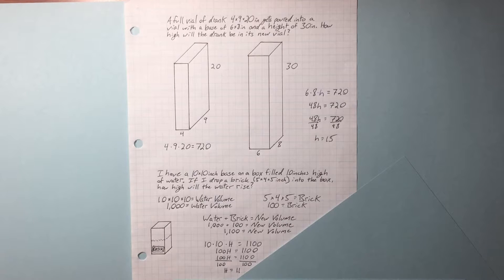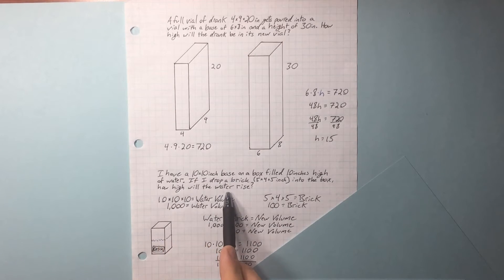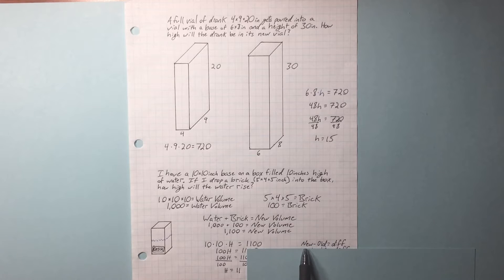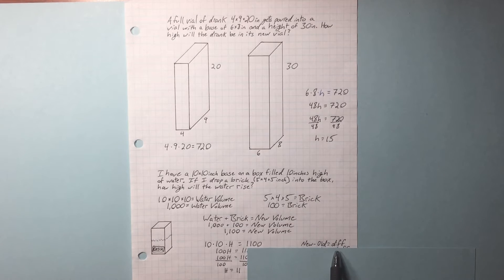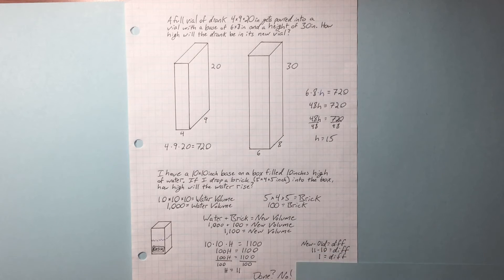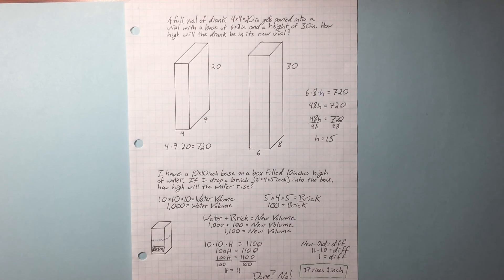They're not asking you how high the water is — they're asking how high will the water rise. The new height of the water minus the old height of the water equals how much the water rose. 11 minus 10 — our difference is 1. So the water rose 1 inch. And that's the answer.